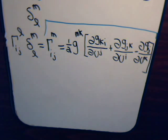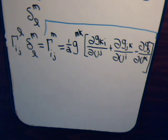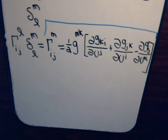We'll make use of this in future videos. In the next two videos, we'll determine the Christoffel symbol for cylindrical coordinates, and once we have that, we'll be ready to discuss covariant differentiation of tensors. Hope this was useful — come back and join us as we continue the discussion.